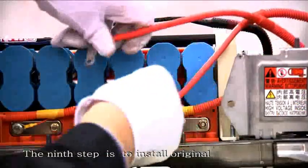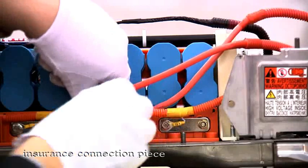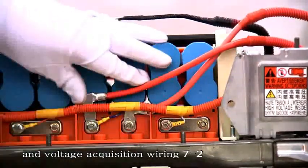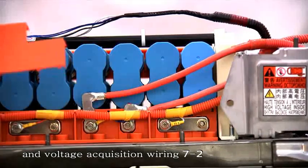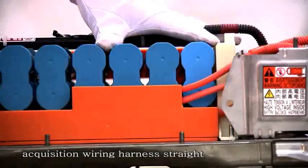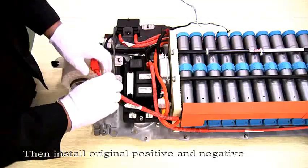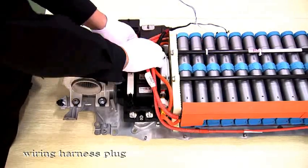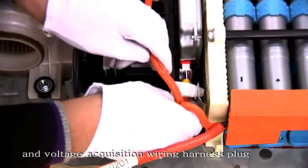The ninth step is to install original insurance connection piece and voltage acquisition wiring harness 7-2. Install the cover plate after getting the voltage acquisition wiring harness straight. Then install original positive and negative wiring harness plug and voltage acquisition wiring harness plug.